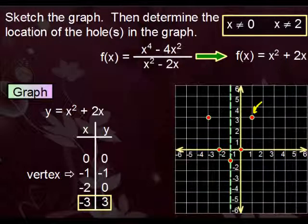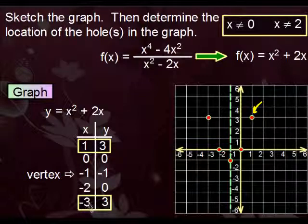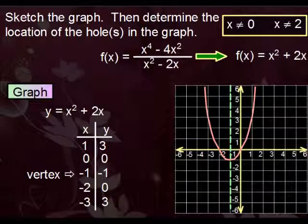Which essentially means this. If we had plugged in 1 instead of negative 3, we would have gotten the same answer. Since that's enough for a graph, there we are.